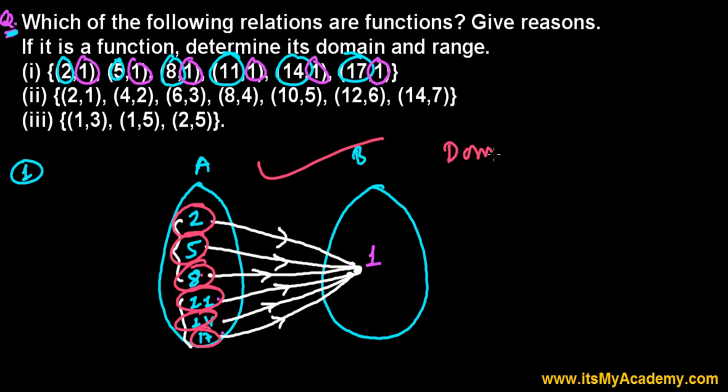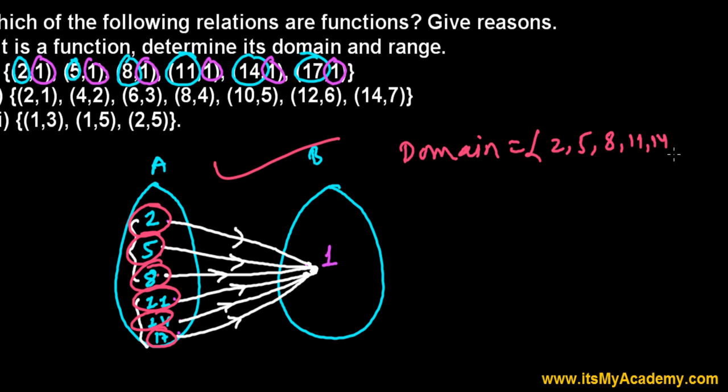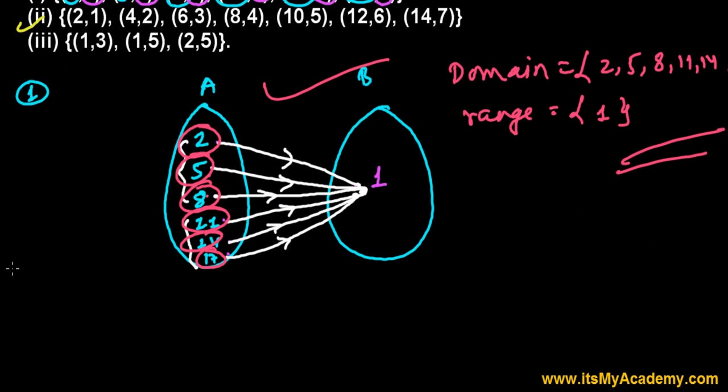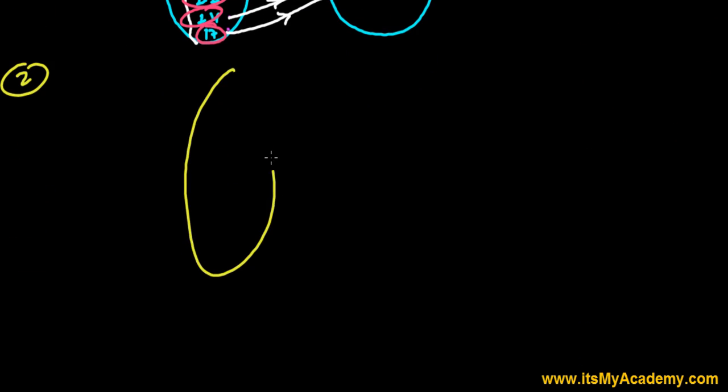So that is why this is a function and in this case the domain is these all six boys: 2, 5, 8, 11, 14, give me more space, 17. And range, range is only 1 here. Range and codomain is same here this time, just 1. And now let's solve the next question, second question.